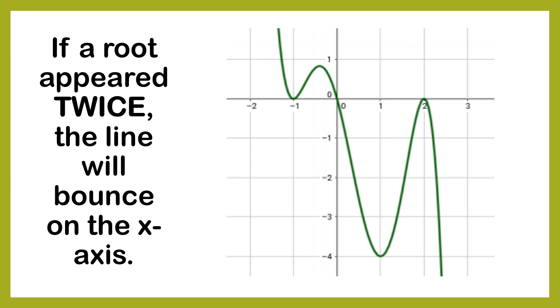If a root appeared twice, it appeared two times, the line will bounce on the x-axis. It won't go past it, it will just bounce. So, if it's coming from the top, it will bounce. When it touches that point, it will suddenly go up. And here's another example. It's coming from the bottom. It goes up. When it reaches this point, it goes straight down. It just bounced, it didn't go past. Remember if it appeared once, it passes through or goes past. But if it appeared twice, it just bounces.